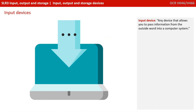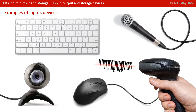An input device is any device that allows you to pass information from the outside world into a computer system. There are literally hundreds of different input devices, but typical ones could be a mouse, a keyboard, a microphone, some kind of barcode scanner and a webcam.